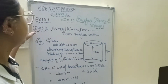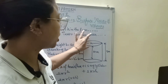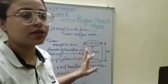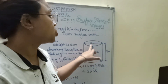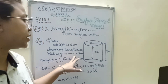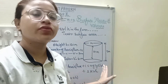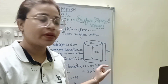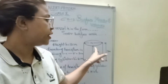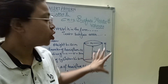The upper part is the hemisphere and the diameter is 14 cm, so the radius is 7 cm. The total height is 13 cm, and since the radius of the hemisphere is 7 cm, the height of the cylinder is 13 − 7 = 6 cm.